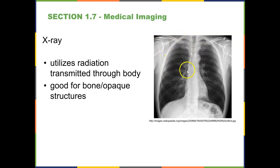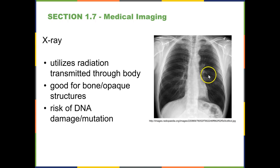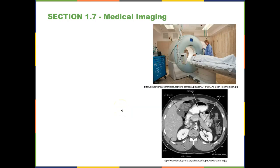We can also see the vertebral column to the posterior of the patient, and outlined here is the heart, located medially and slightly to the patient's left — that's why we have an 'L' over here indicating the patient's left and right. There is a risk of DNA damage or mutation, though not much if you get one x-ray here or there. However, if you're continuously being bombarded with x-rays, that can damage DNA.